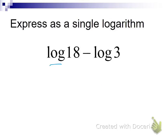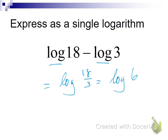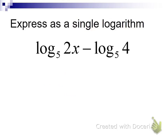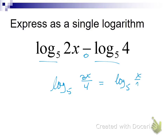If I've got two logs with the same base being subtracted, I can turn that into one logarithm making it division — the first is always in the numerator, the second always in the denominator. For example, two logarithms with the same base being subtracted: subtraction leads to division. Put the first in the numerator, the second in the denominator — 18 divided by 3 is 6, so this is log 6. Don't drop the logarithm; we're merging down to one, not none. Same thing with log base 5: this becomes log base 5 of 2x over 4, which simplifies to log base 5 of x over 2.